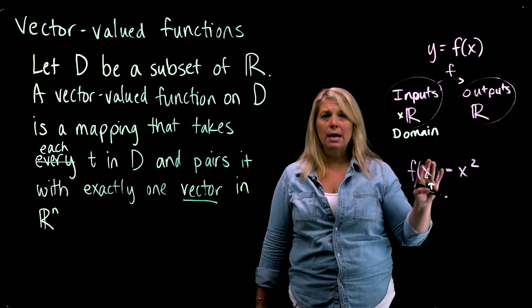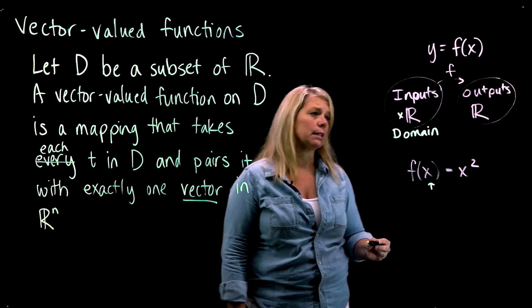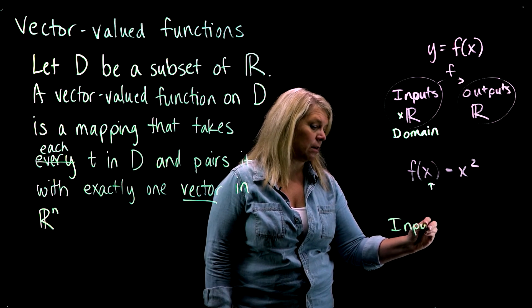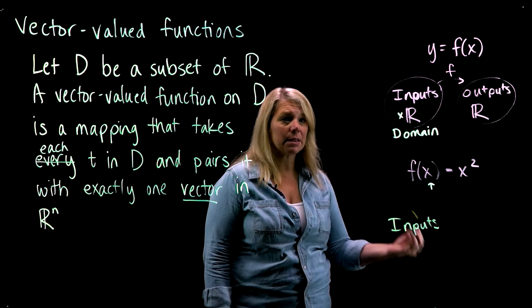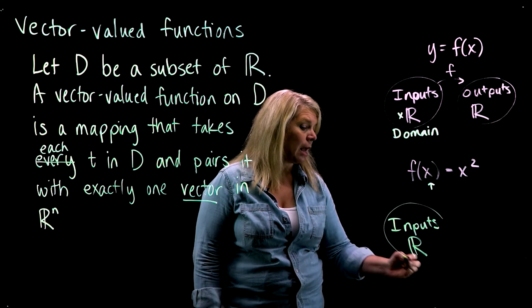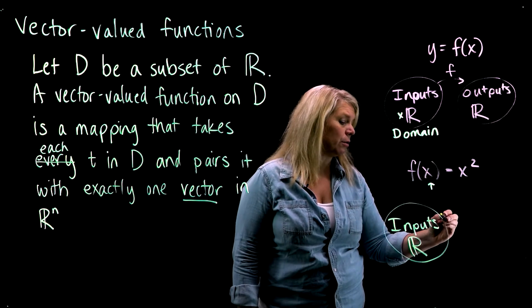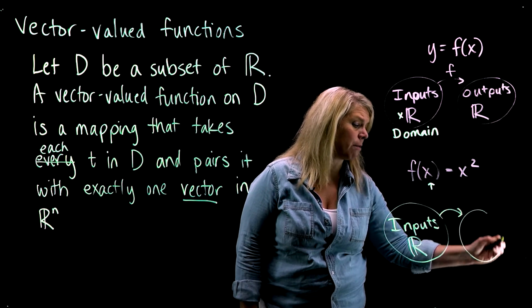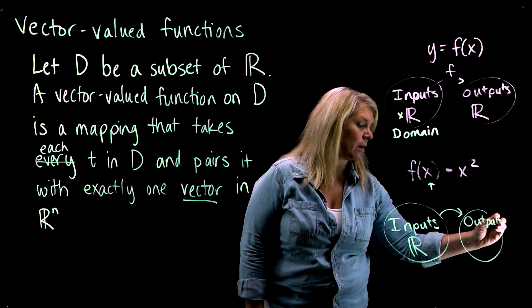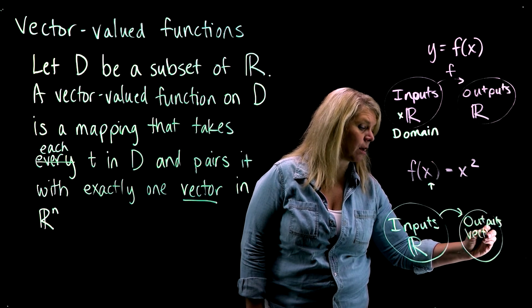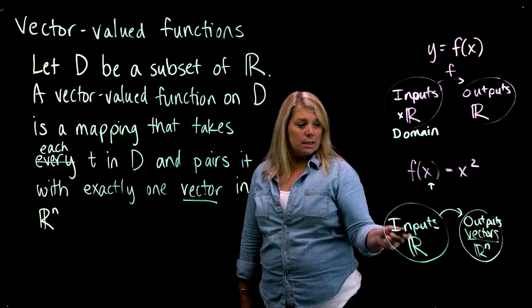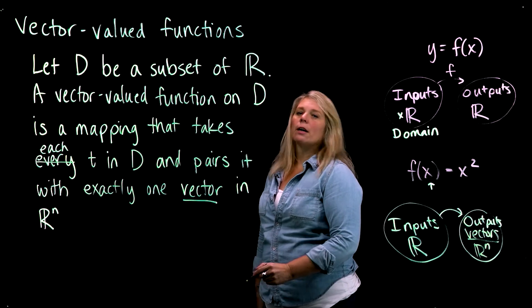If I want to draw a diagram here for vector-valued functions, the idea would be that our inputs would be some subset of real numbers, maybe not all real numbers, but some subset of real numbers. And instead of being mapped to another subset of real numbers, our outputs are vectors, and those would be vectors in ℝⁿ. So this is what we're talking about with vector-valued functions.